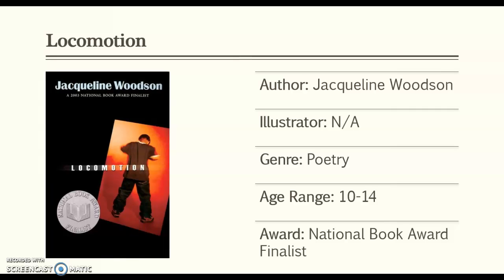This book is Locomotion by Jacqueline Woodson. This book is what you would call a novel in verse. It uses quite a few different types of poetry — it uses free verse and it even has sonnets. It's written from the point of view of Lonnie Motion, and he is a child in the foster care system. It involves themes of family, the future, hope, and also multicultural issues.